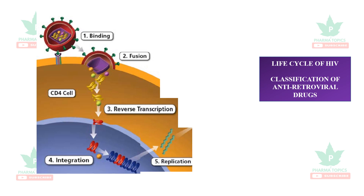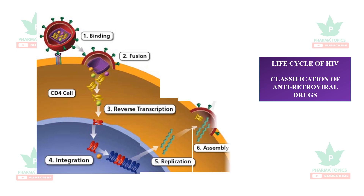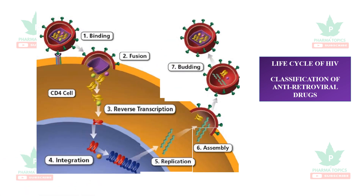The next step is replication, forming viral proteins and RNA. Then comes the assembly of the viral RNA and viral proteins, which becomes encapsulated inside the capsid. The next step is budding, where several new virions are released and go on to infect other CD4 cells.